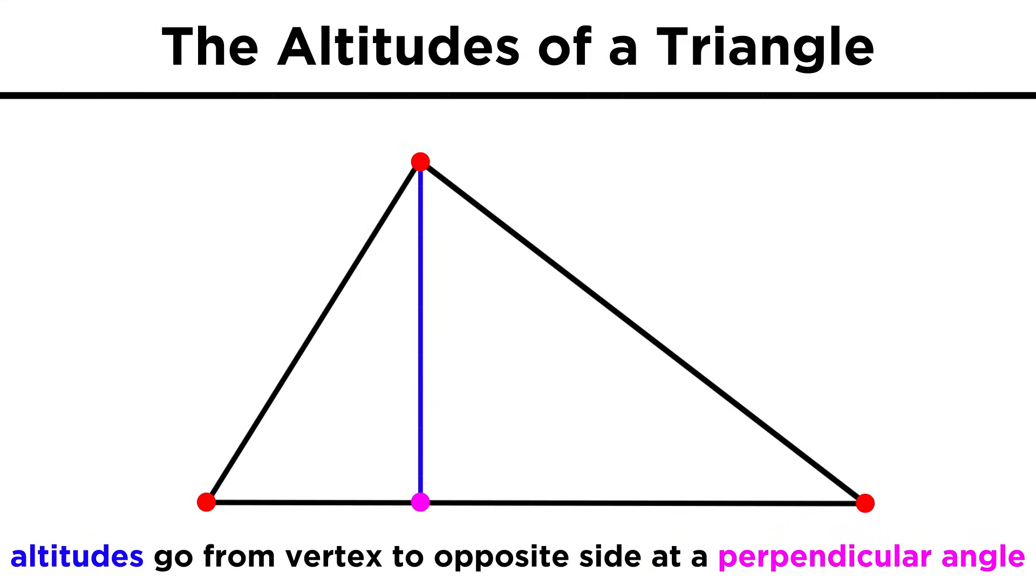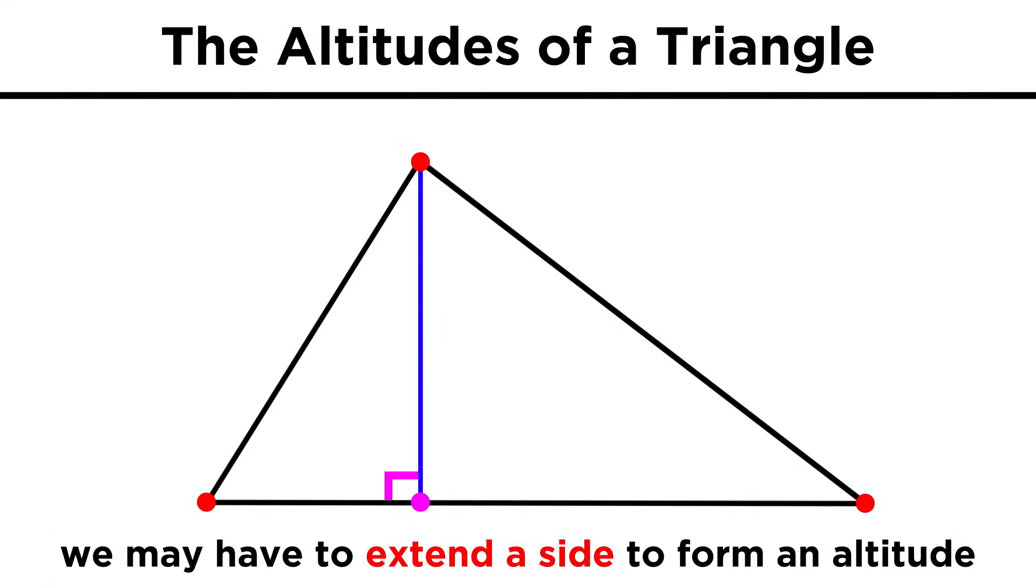We can also identify the altitude of a triangle. This is what we get when we start from a vertex and make a line segment that extends towards the opposite side in perpendicular fashion. If we have to extend the opposite side in one direction or the other to get this, that's what we do. We just need to make a right angle.